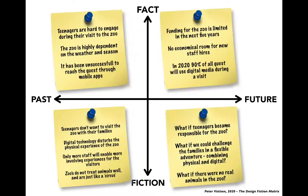That informed our way of beginning to create these what-if questions. What if teenagers became responsible for the zoo? How could we create scenarios where they would do that? Could we sort of turn the power balance? What if we could challenge families in a flexible adventure combining physical and digital — using digital not as a thing on its own, but just as a tool to make the physical aspects of the zoo more engaging? An empowerment of the guests. And we also made a possible scenario: because there is a lot of debate about zoos in the world, especially larger animals and simian animals — what if there were no real animals in the zoo in the future? How would we then cope with zoological experiences? That was one of many scenarios we began to develop, just to show how this can be rooted up and used as arguments for each other in these quadrants.